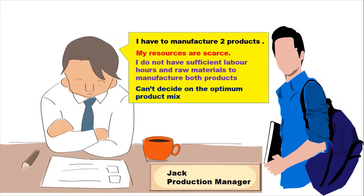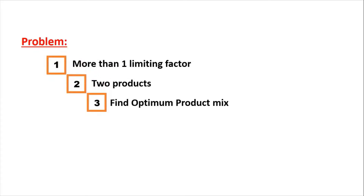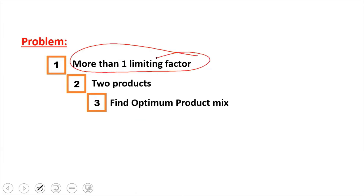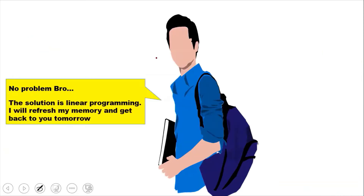He can't decide on the optimum product mix. You immediately make a mental note of the problem: one, there is more than one limiting factor; two, there are two products; and three, you have to find the optimum product mix. In the previous class you studied how to find the optimum product mix when there is only one limiting factor, but you do not know how to find it when there is more than one limiting factor. You remember your teacher telling you that the solution for this is linear programming. Without further delay, you reply: no problem bro, the solution is linear programming. I will refresh my memory and get back to you tomorrow. And you decide to watch the video on linear programming.